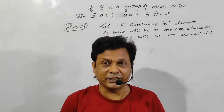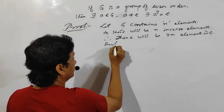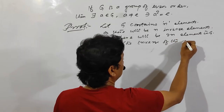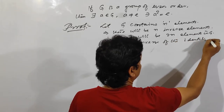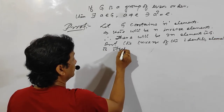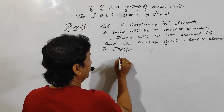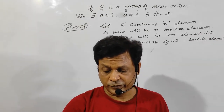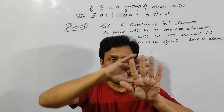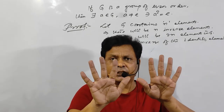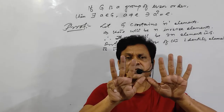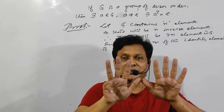The inverse of the identity element is itself. So if there are five elements, and five inverse elements, that is ten, but the inverse of identity is itself, so one element is reduced — it becomes nine elements, which is odd.